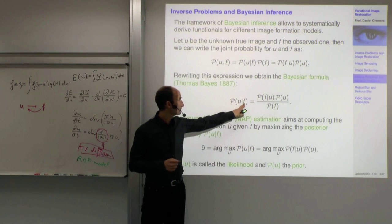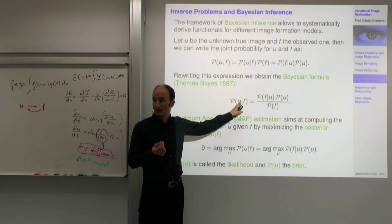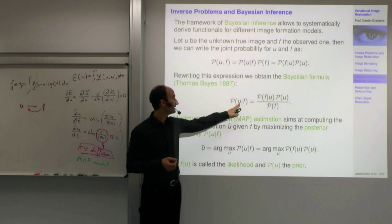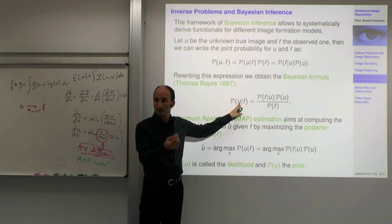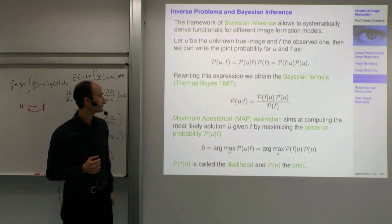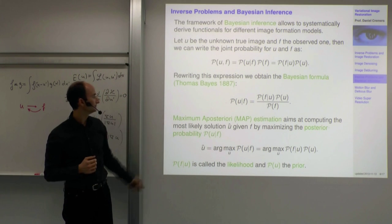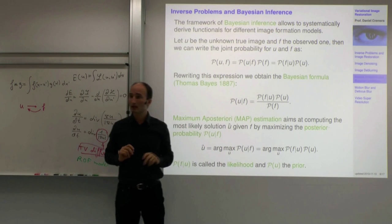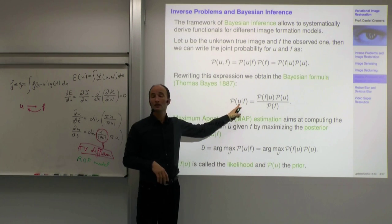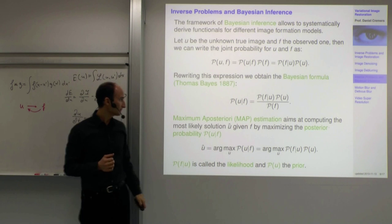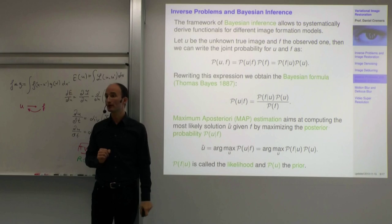In the context where F is the observation and U is the model state we want to infer, P(U|F) is called the posterior — how likely is any true image given the observation. One way to solve inference problems is to find the most likely interpretation U for the given data. This approach is called maximum a posteriori estimation, sometimes abbreviated MAP.